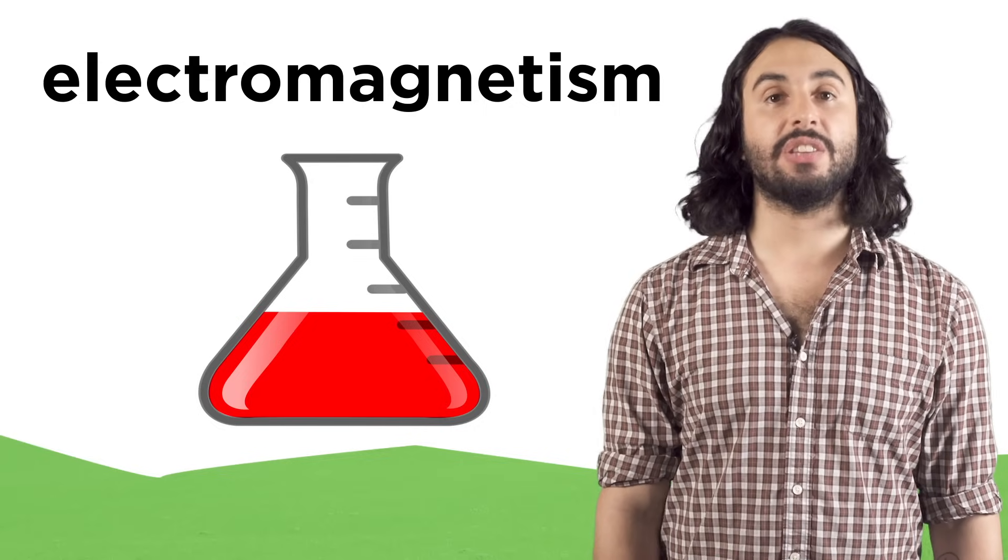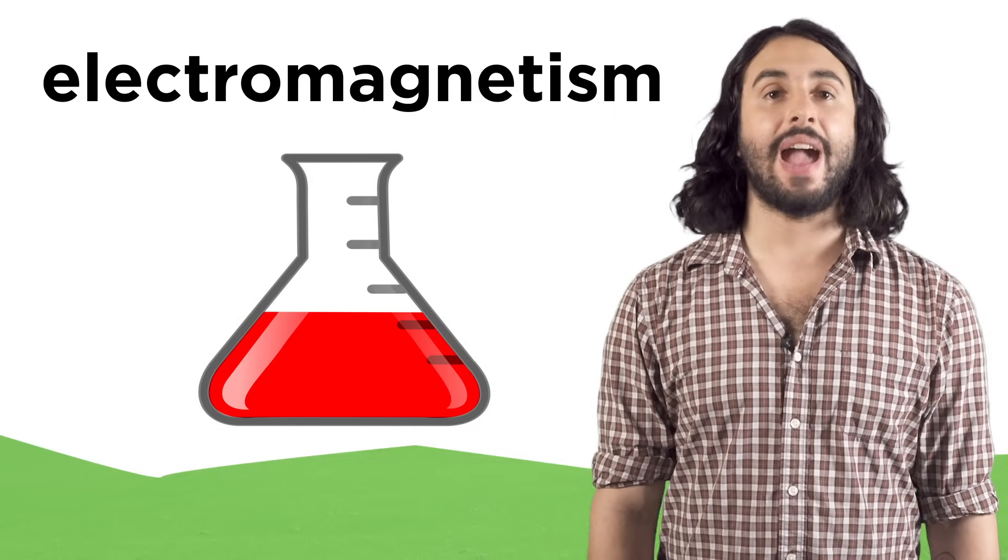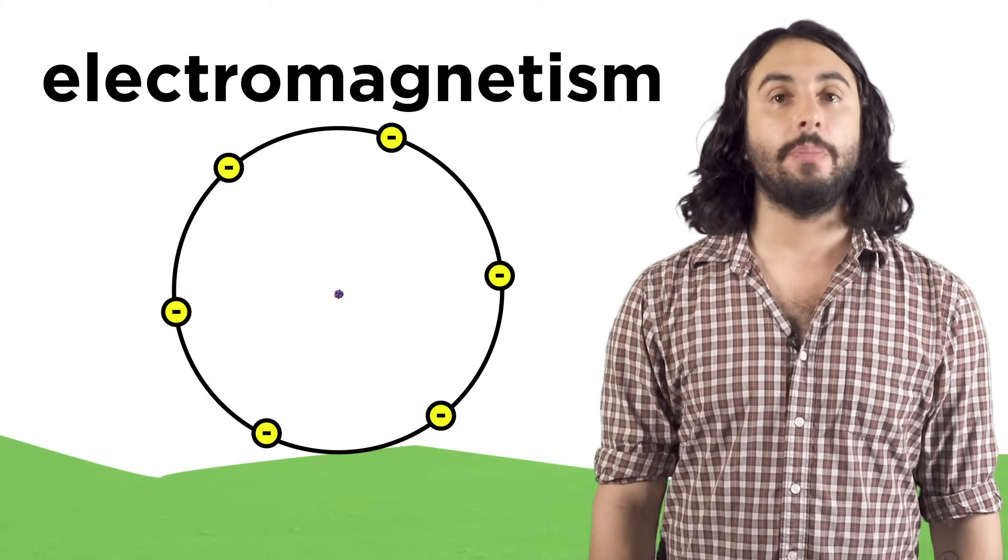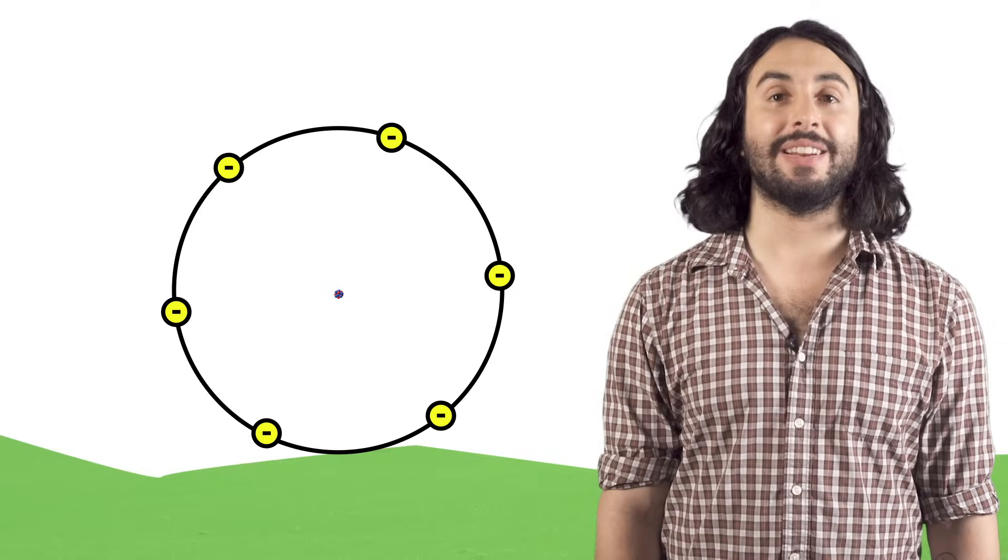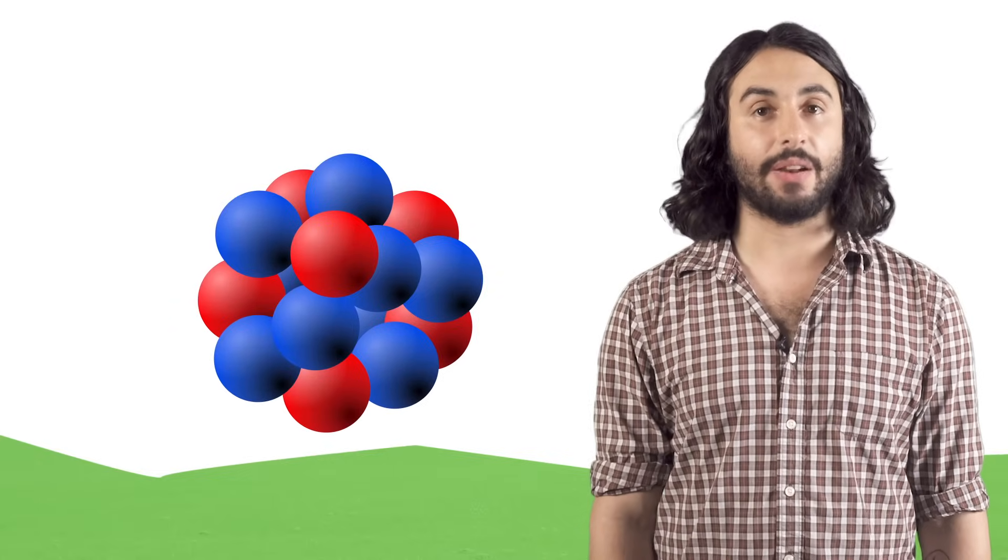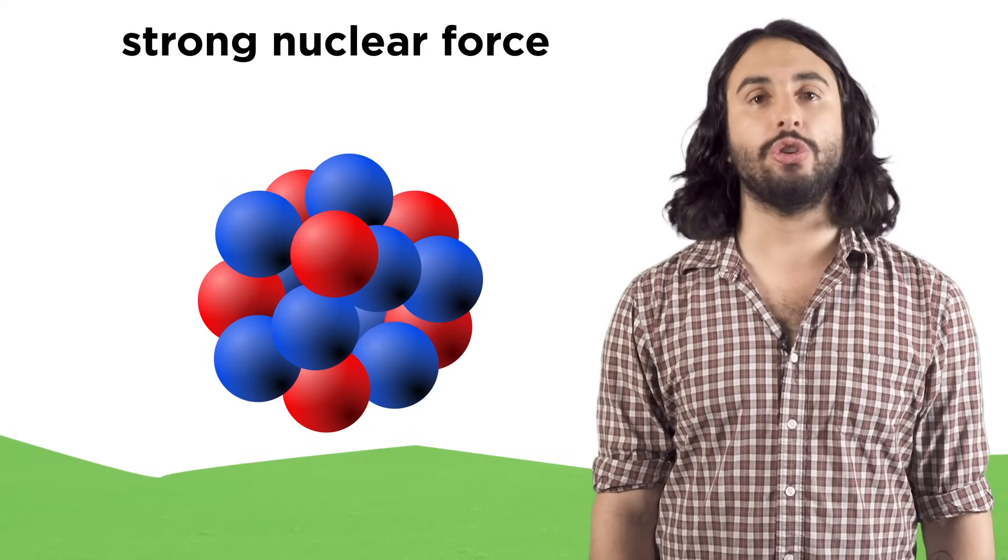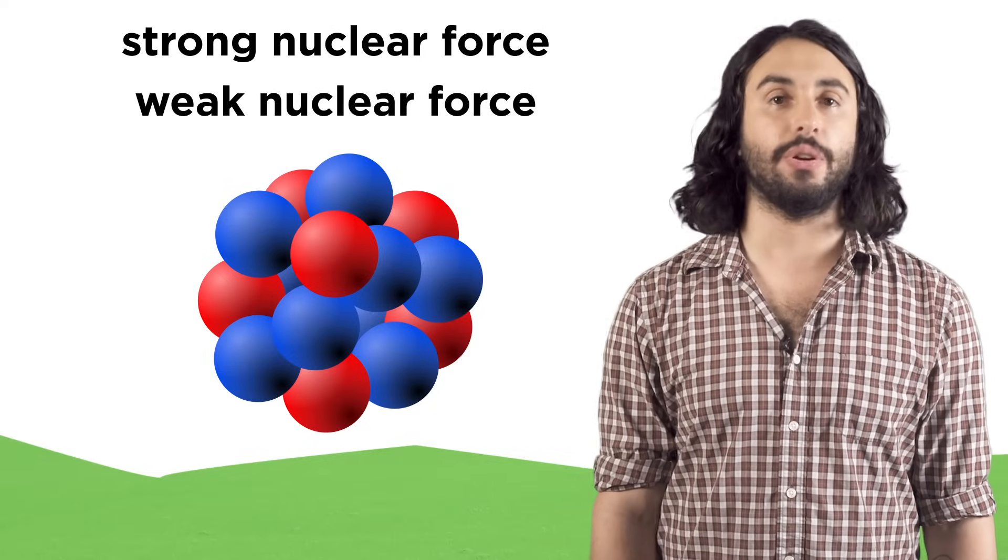Electromagnetism, as we mentioned, is what makes chemistry happen and it operates on the scale of atoms and molecules. But the other two forces operate on a scale even smaller than that, the scale of the atomic nucleus. These are called the strong nuclear force and the weak nuclear force.